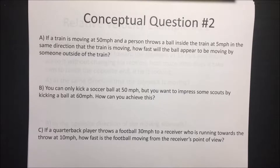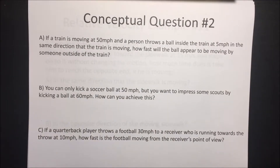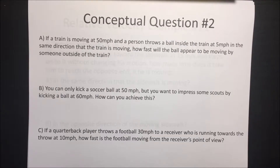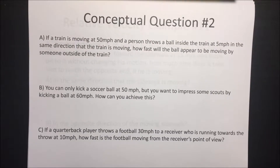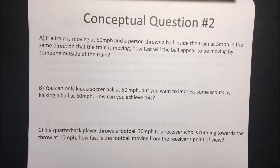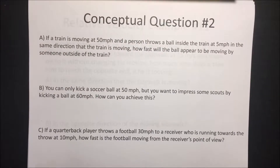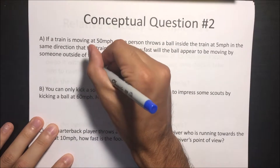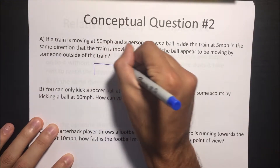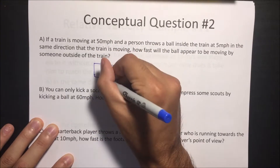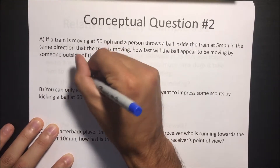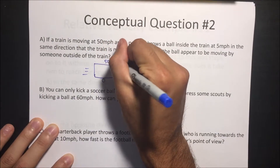Next conceptual questions. This relative velocity stuff is one of my favorite topics. If a train is moving at 50 miles per hour and a person throws a ball inside the train at 5 miles per hour in the same direction the train is moving, how fast will the ball appear to be moving to someone outside the train? Let's draw this scenario out. We have a train going pretty fast — 50 miles an hour.